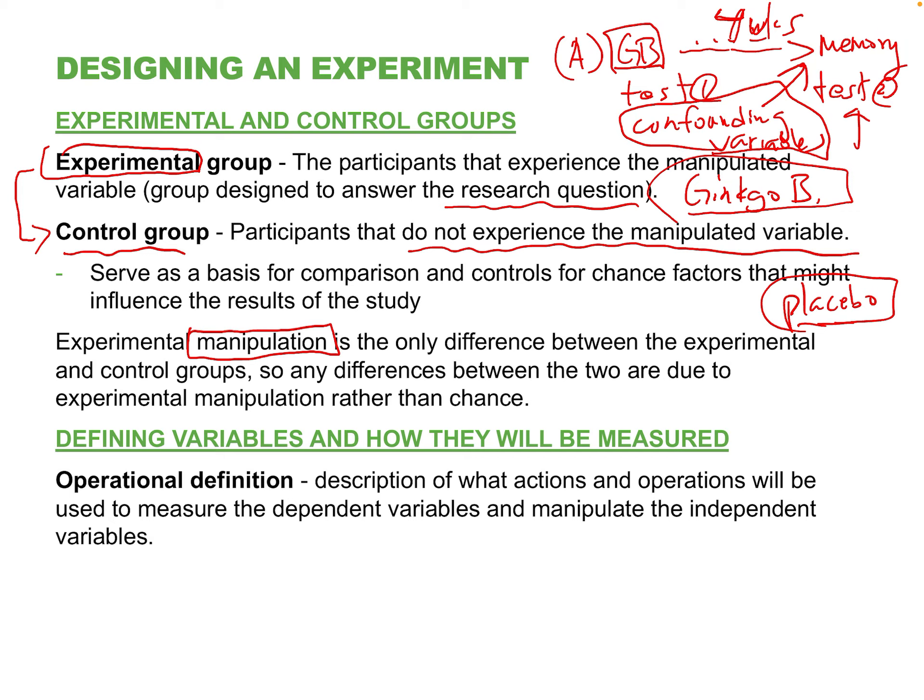The act of giving the experimental group ginkgo biloba pills is called manipulation. In every experiment there's a manipulation of the variable — I give one group something and withhold it from the control group. That kind of experimenter intervention does not exist in descriptive studies. In a survey or interview, there's no intervention; you're merely measuring what people are already doing.